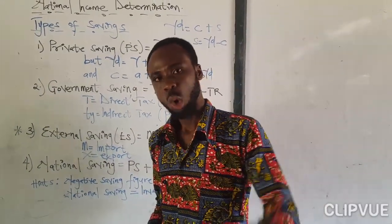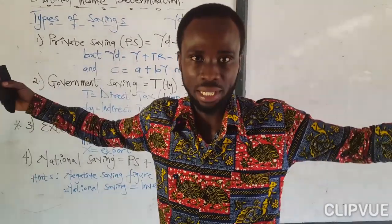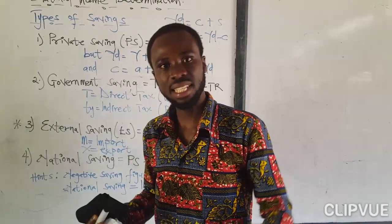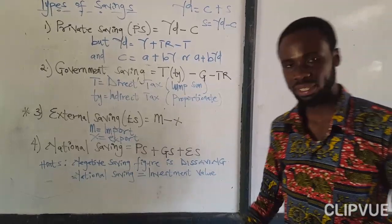We calculate for external savings. Listen to me carefully. Whereby import and export are in the question, it means that the economy is open. The economy is open. That means international trade is part. So it is import minus export. That is how it is.